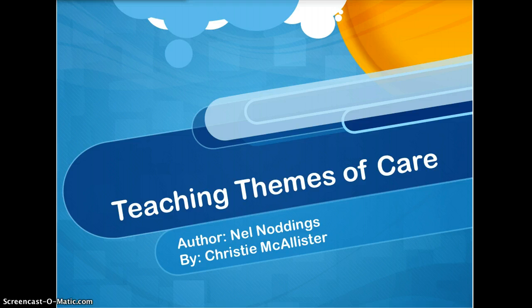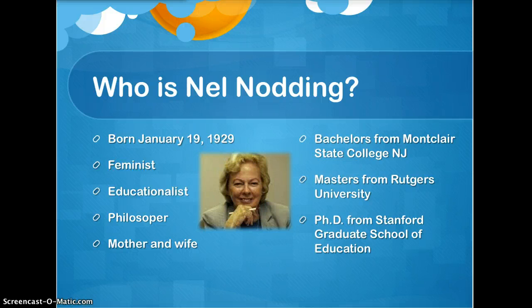Nell Noddings was born January 19, 1929. She's a feminist, an educationalist, and a philosopher. She's a mother of 10 children and a wife for 60 years. She got her bachelor's in New Jersey, her master's from Rutgers University, and a Ph.D. from Stanford Graduate School of Education. She also continued to be a teacher there and became a dean at Stanford and many other things.